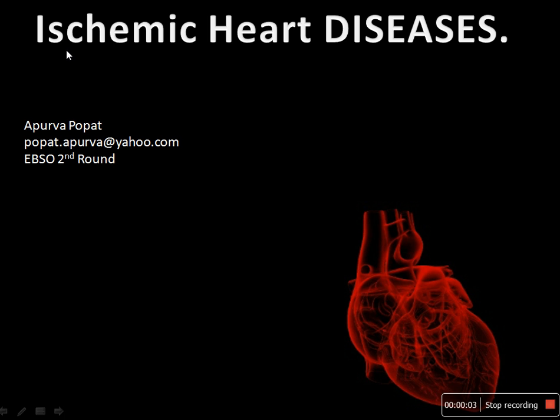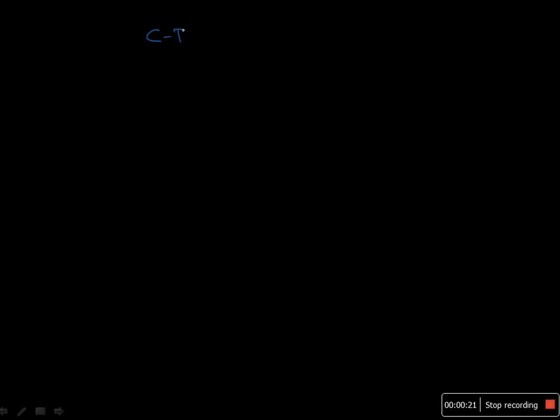We are going to discuss ischemic heart diseases. This video is prepared for the second round of Elsevier. To begin with, ischemic heart disease is not a single disease — these are a group of clinical pathological syndromes which are produced due to an imbalance between oxygen supply and oxygen need.